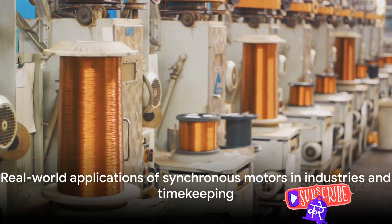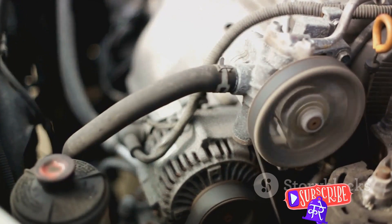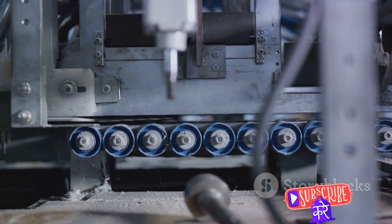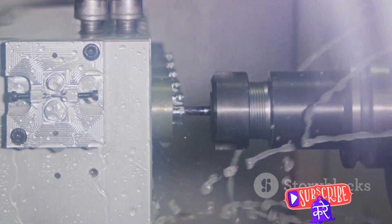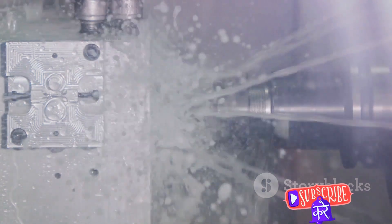To answer that, we need to look at the real-world applications of these motors. In the realm of industrial machinery, synchronous motors are the unsung heroes. They power conveyor belts, drive pumps, and run compressors with an unwavering consistency. This precision is essential in industries where even the slightest variation in speed can lead to significant production issues.